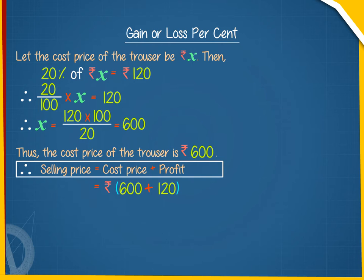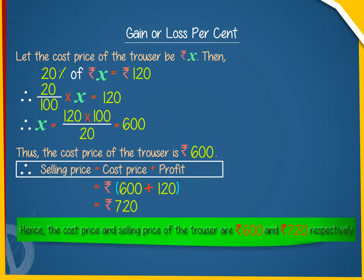Selling price equals rupees 720. Hence the cost price and selling price of the trouser are rupees 600 and rupees 720 respectively.